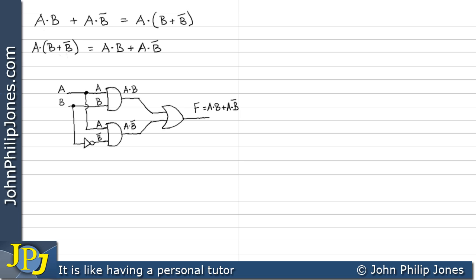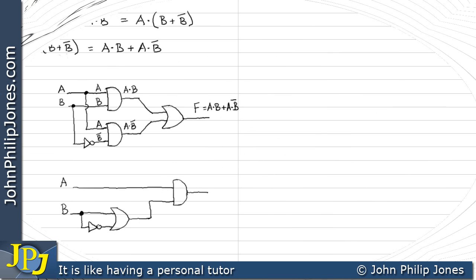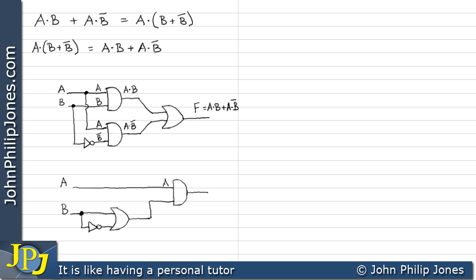Let's now draw the combinational logic circuit for the other expression. We have A going into an AND gate. Then B going into an OR gate, along with NOT B, because B is taken through a NOT gate. So in this position we have B OR NOT B, and the output at F would therefore be equal to A AND'd with (B OR NOT B).